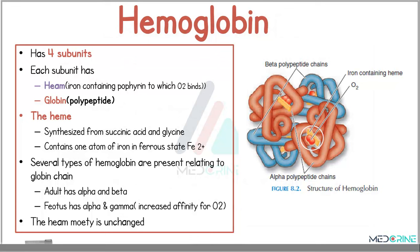The hemoglobin has four subunits, and each subunit is made of a heme component and a globin component. The heme, or iron-containing porphyrin, is synthesized from succinic acid and glycine. This heme contains one atom of iron in the ferrous state. Several types of hemoglobin are present relating to the globin chain — an adult has alpha and beta chains, while the fetus has alpha and gamma chains which have an increased affinity for oxygen.